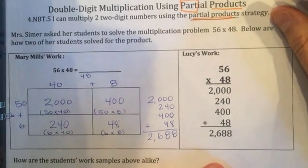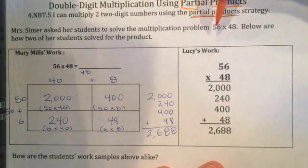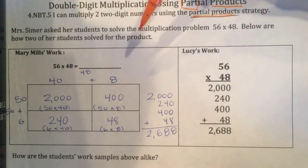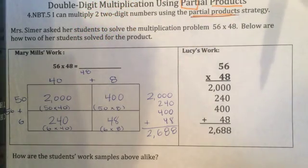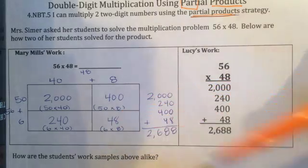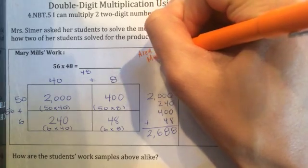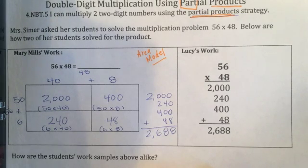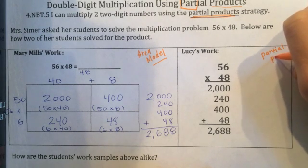Let's look at our first problem: 'Miss Simer asked her students to solve the multiplication problem 56 times 48. Below are how two of her students solved for the product.' We have Miss Mary Mills' work — she did the area model, so write 'area model' over there. And then Lucy did what we call the partial products model, so write 'partial products' over there.